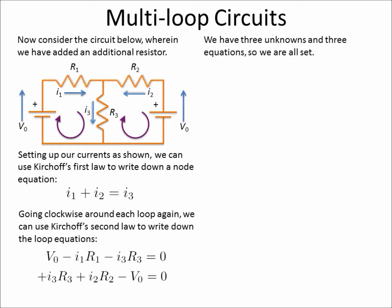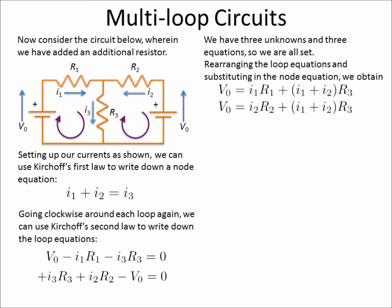So we have three equations and three unknowns, so we're all set. Let's start working things up. Using the junction rule, or the node equation here, we're going to substitute it into these two equations.